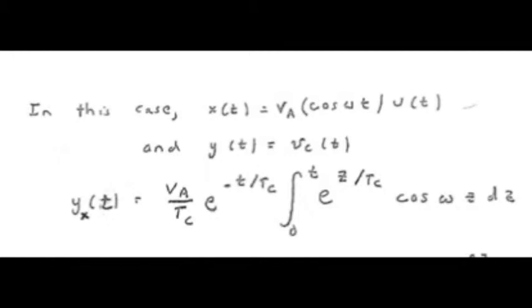For simplicity, we take phi equal to zero, and we'll relax that assumption later in the lesson. But in that case, the expression for the Y sub X part of the state variable response can now be written as shown in the bottom line of this slide. We're integrating the product of an exponential function and a cosine function.